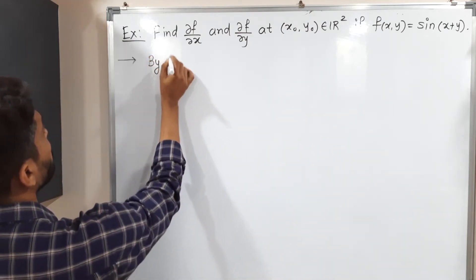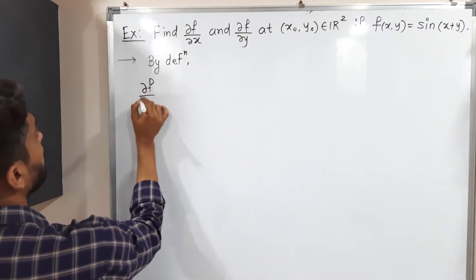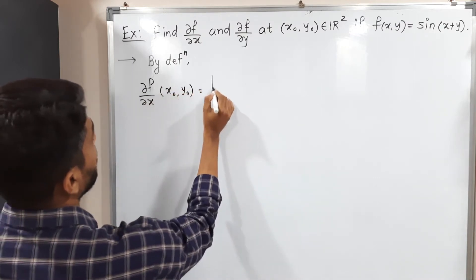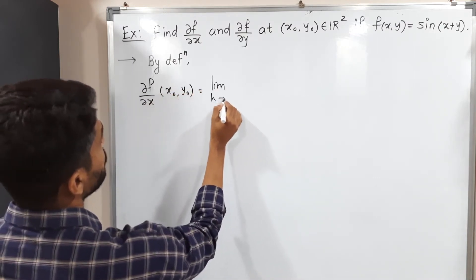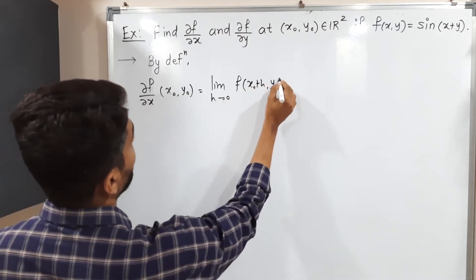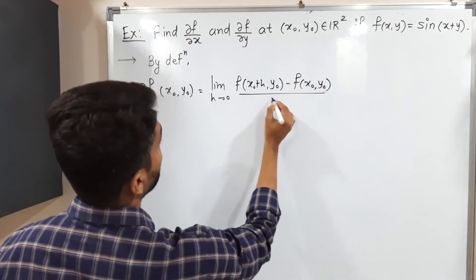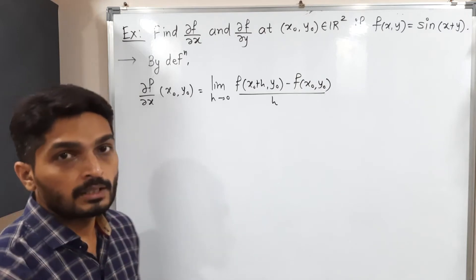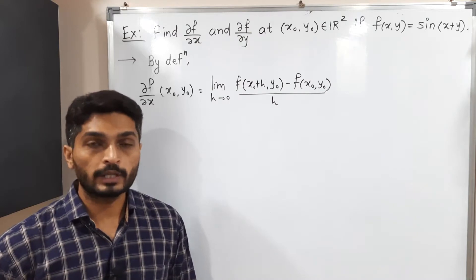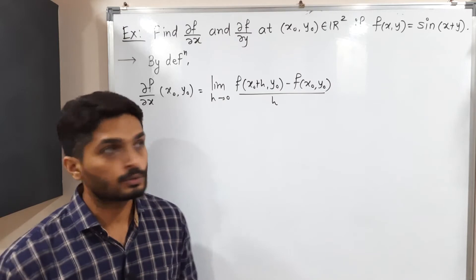By definition, ∂f/∂x at point (x₀, y₀) is equal to: limit as h tends to 0 of [f(x₀ + h, y₀) − f(x₀, y₀)] divided by h. Since we are finding the derivative with respect to X, that means with respect to the first component, so we are adding h only in the first component.